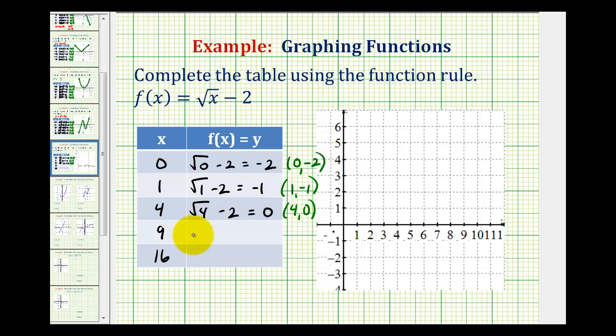Next, we have x equals nine. So we'd have the square root of nine minus two for the function value or y. Square root of nine is three. Three minus two is equal to one. So the graph of the function contains the point nine, one.